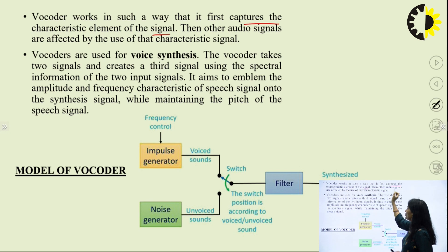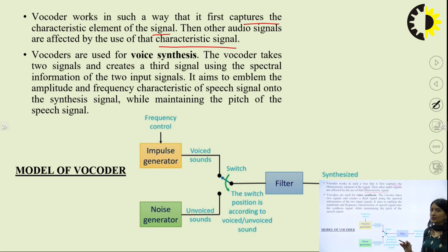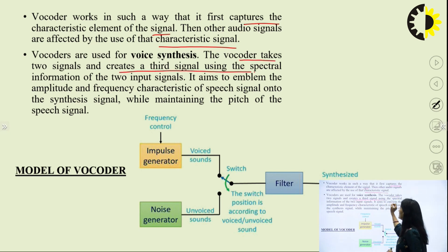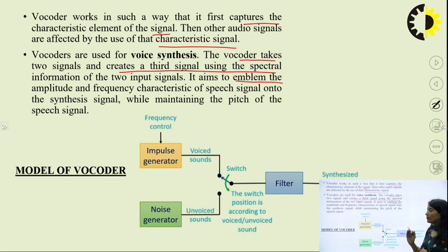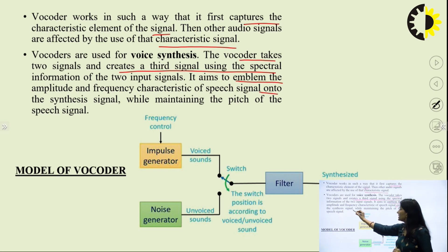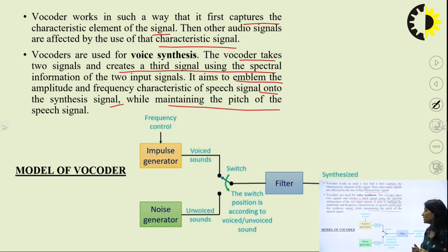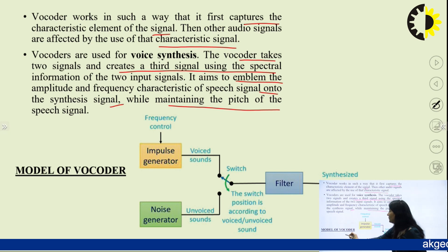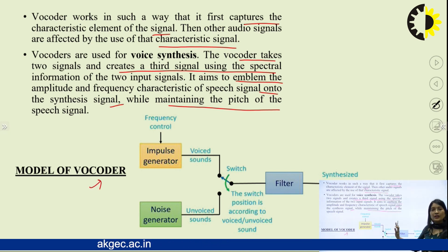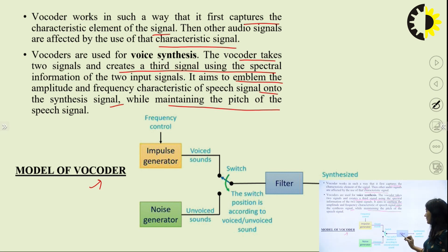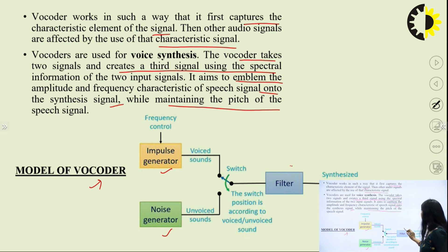The other audio signals are affected by the use of those characteristic signals. Vocoders are used for voice synthesis — first analysis, then transmission of parameters, and the third is synthesis. The vocoder takes two signals and creates a third signal using spectral information in the two input signals. It aims to embed the amplitude and frequency characteristics of a speech signal onto the synthesis signal while maintaining the pitch of the speech signal. Here we can see the model of a vocoder.